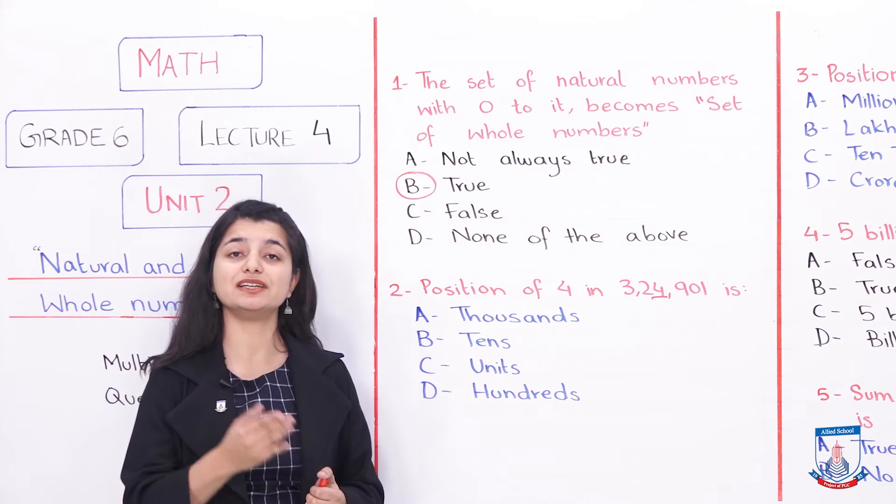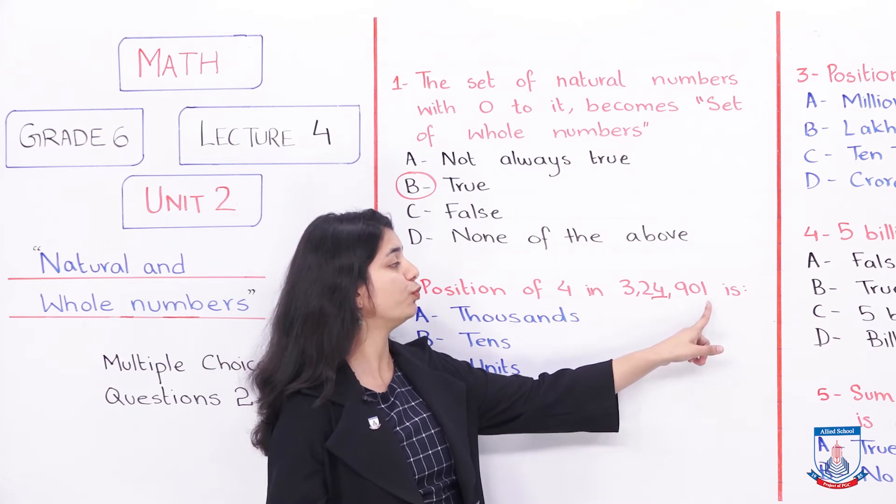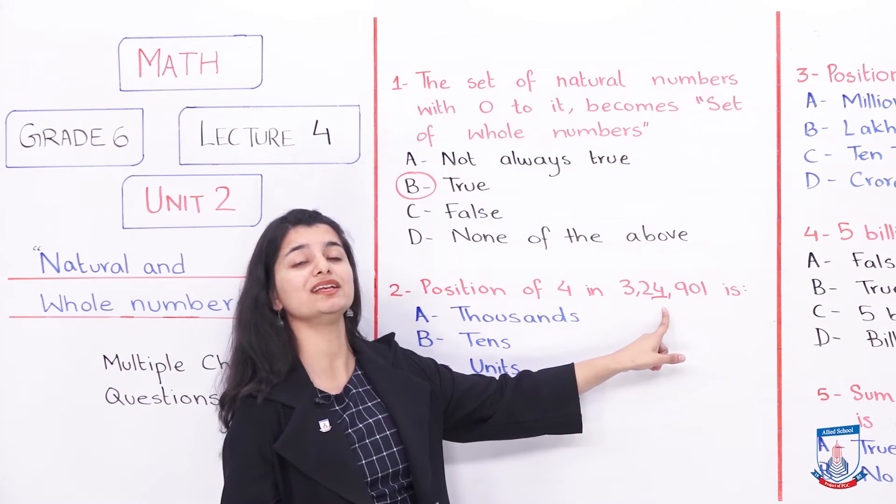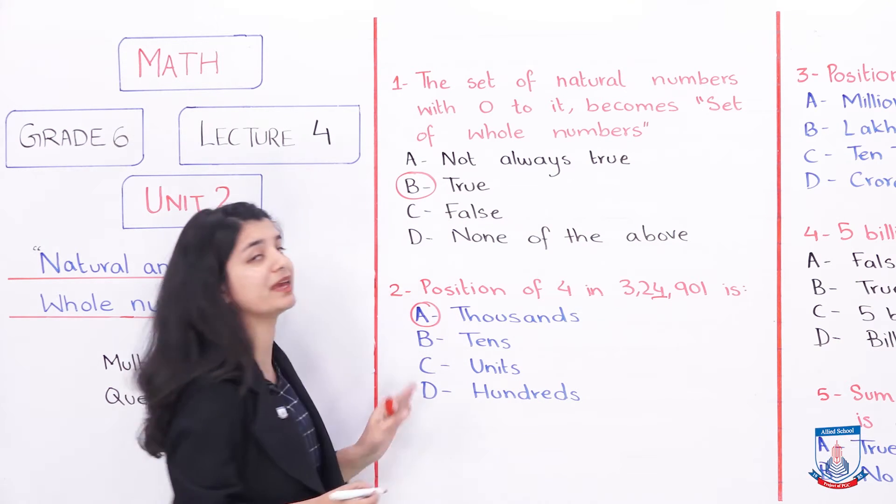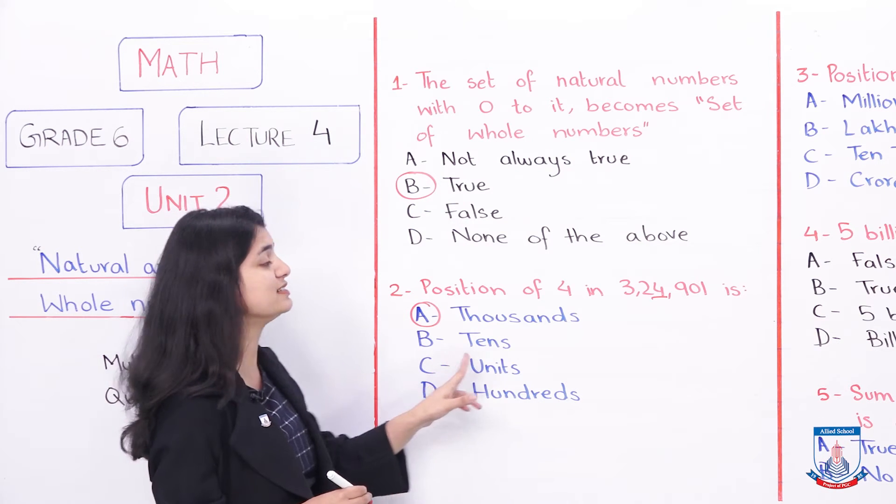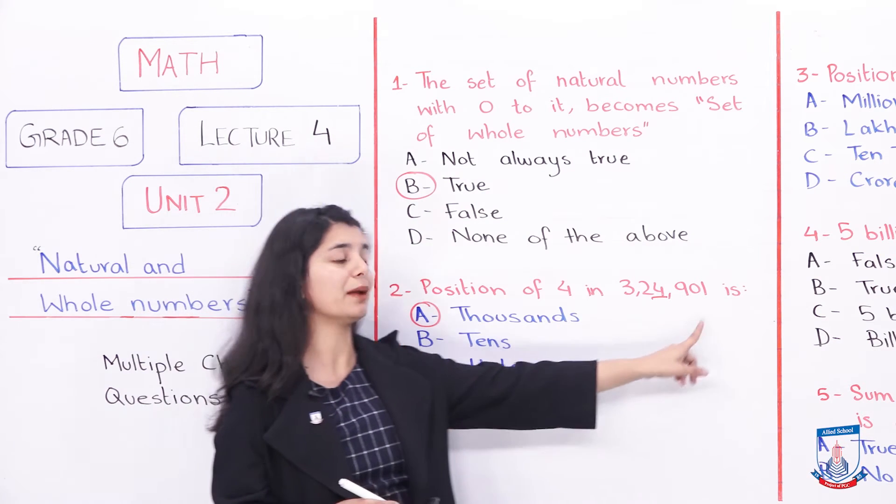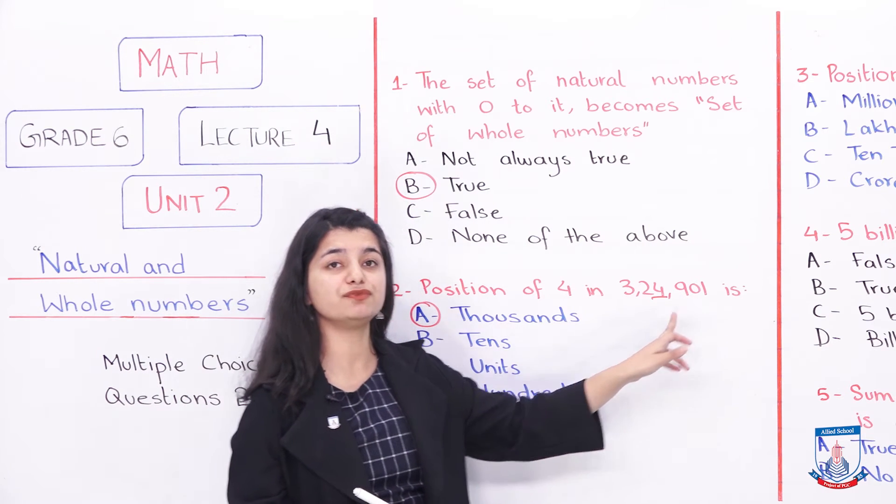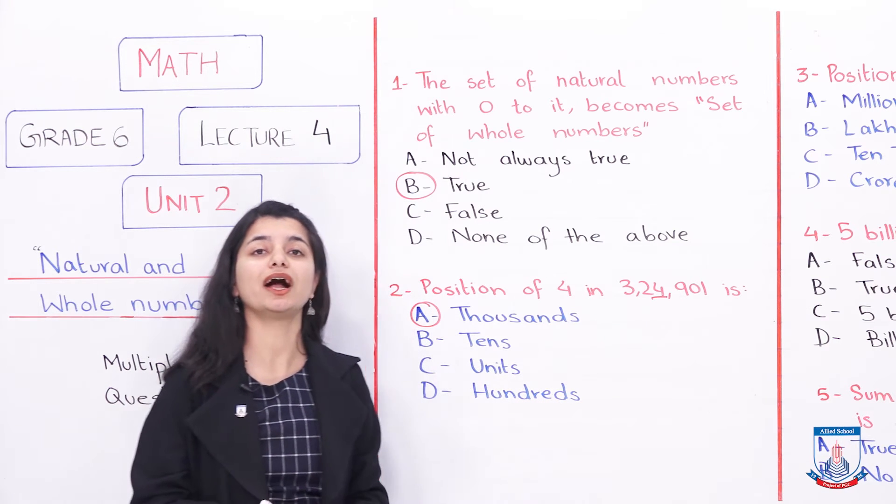We know where are the units, where are the hundreds, tens, where the places are. We will see where 4 falls. So, 1 is units, 0 is tens, 9 is hundreds and 4 is thousands. Here is the thousands option, which is option A. That is why the correct answer is A. If we look at tens, there is 0. In units place, we have 1. And in hundreds place, we have 9. None of these fall on the thousands place. The value of 4 is thousands. So, the answer is A.